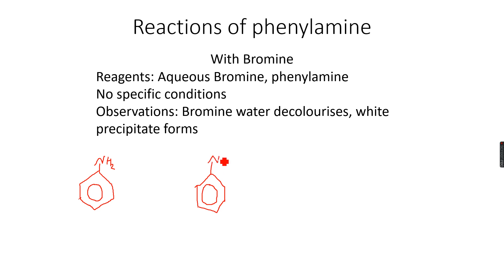NH2 and in the two, four, and six positions we get bromine Br. So this is two, four, six tribromo phenylamine. The name sounds very complicated but I'll write it for you.